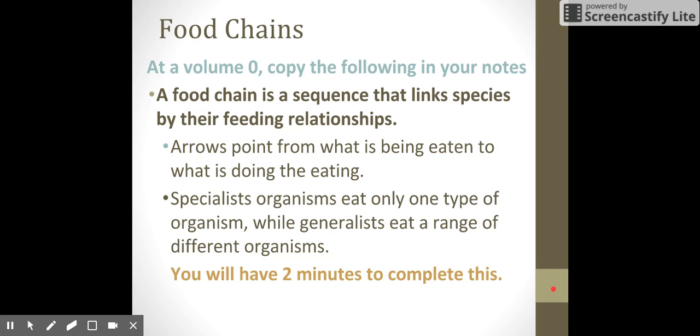Specialist organisms only eat one type of organism, while generalists eat a range of different organisms. Humans are generalists. We can eat plants or animals. However, cats are actually based on eating only meat, so they are more specialized in what they have to eat. Make sure that you know that because it makes it really important when we look at energy pyramids, food webs, food chains, and interactions in the ecosystem.